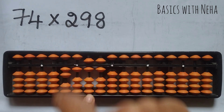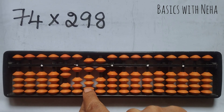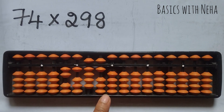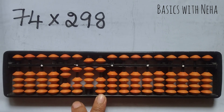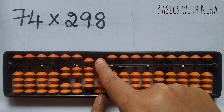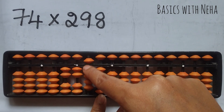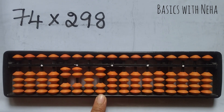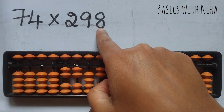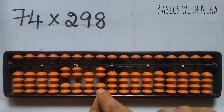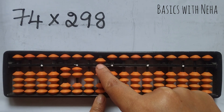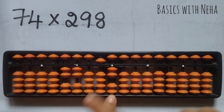4 nines are 36. So you can place 3 directly. You have to place 6 here. To place 6 here, it is plus 10 minus 5 plus 1. But plus 10, I cannot do it here, so I'll jump the rod and do plus 10 minus 5 plus 1 and remove everything from the jumped rod. Then 4 eights are 32, so you have to place 3 here, which is plus 5 minus 2, and 2.